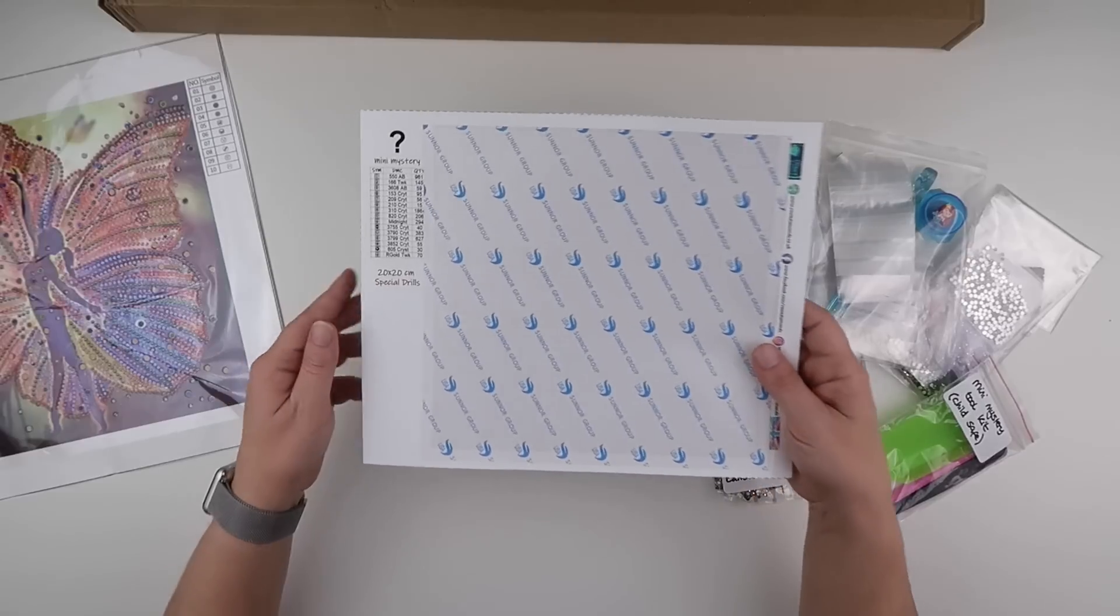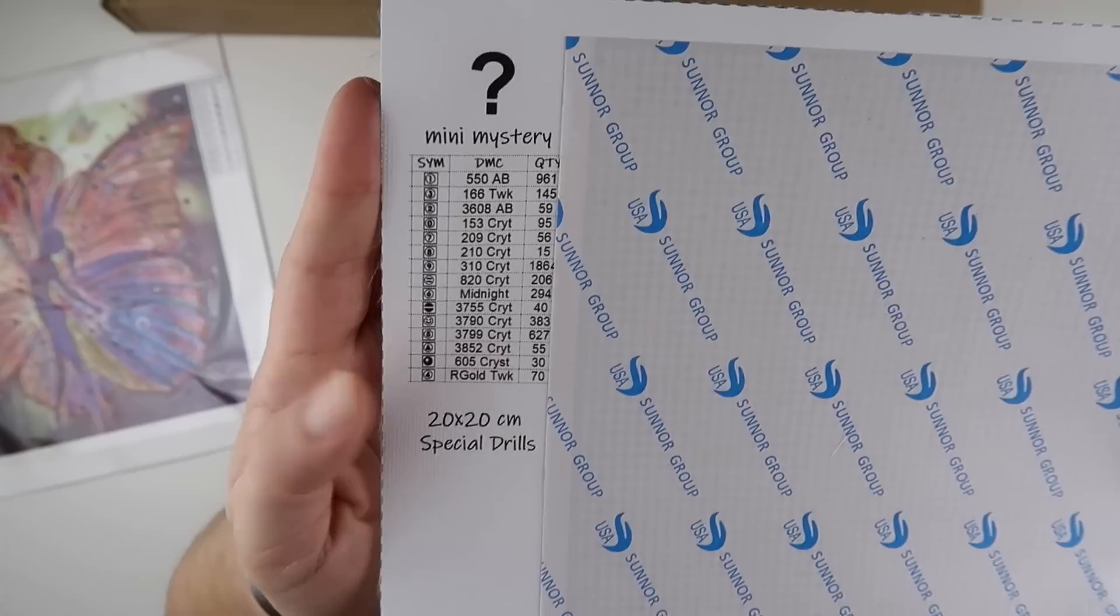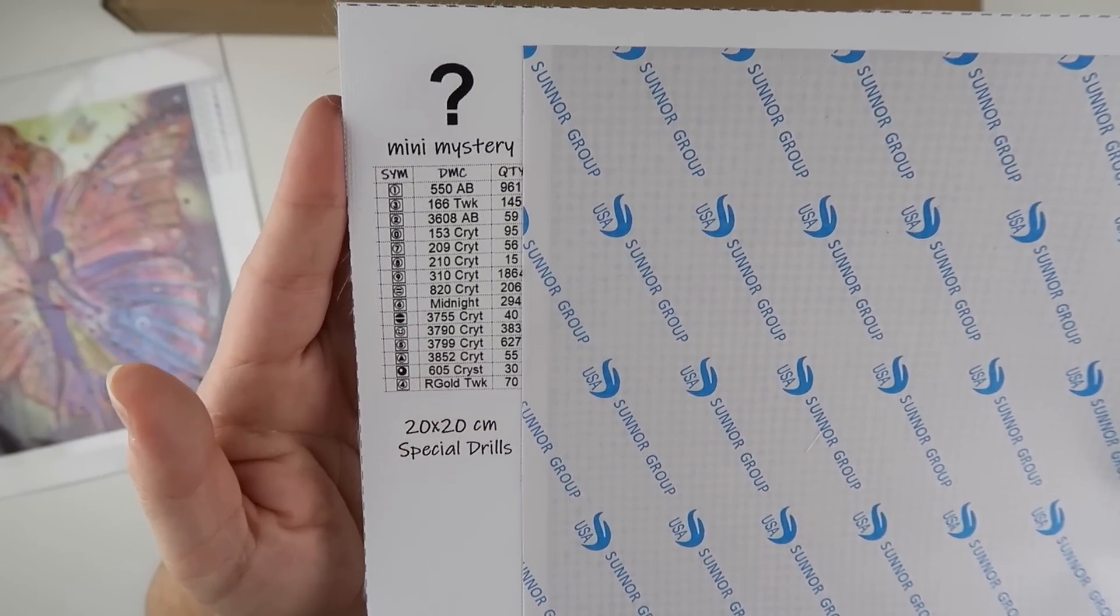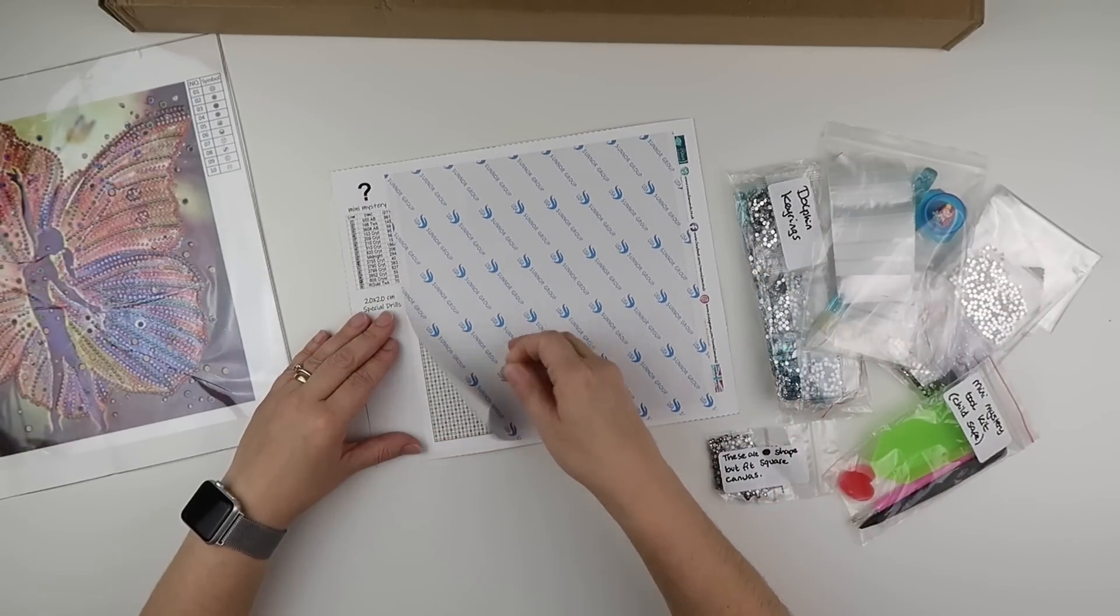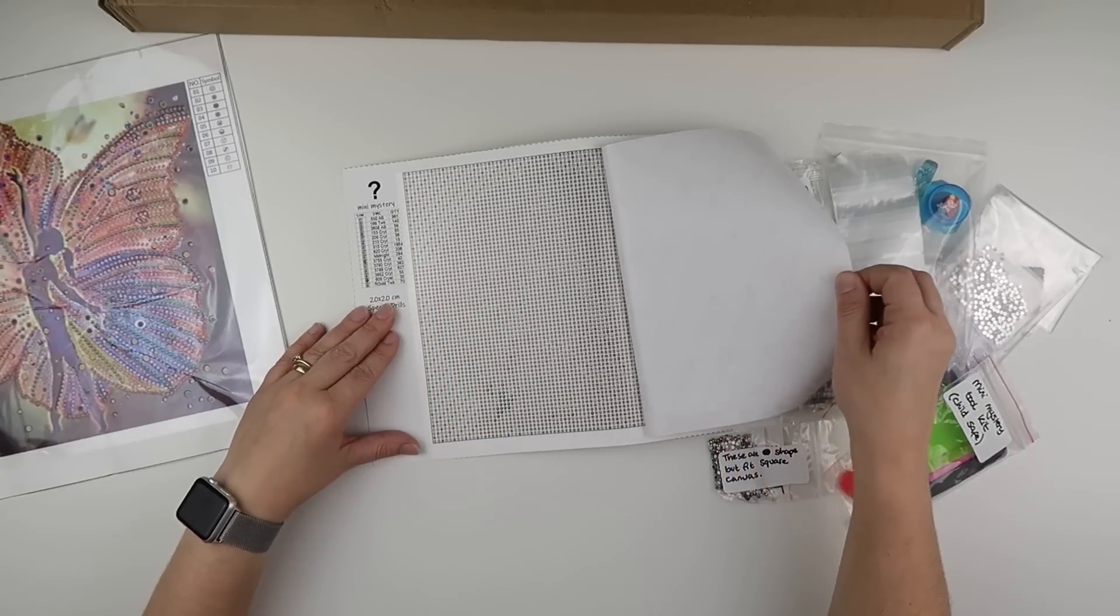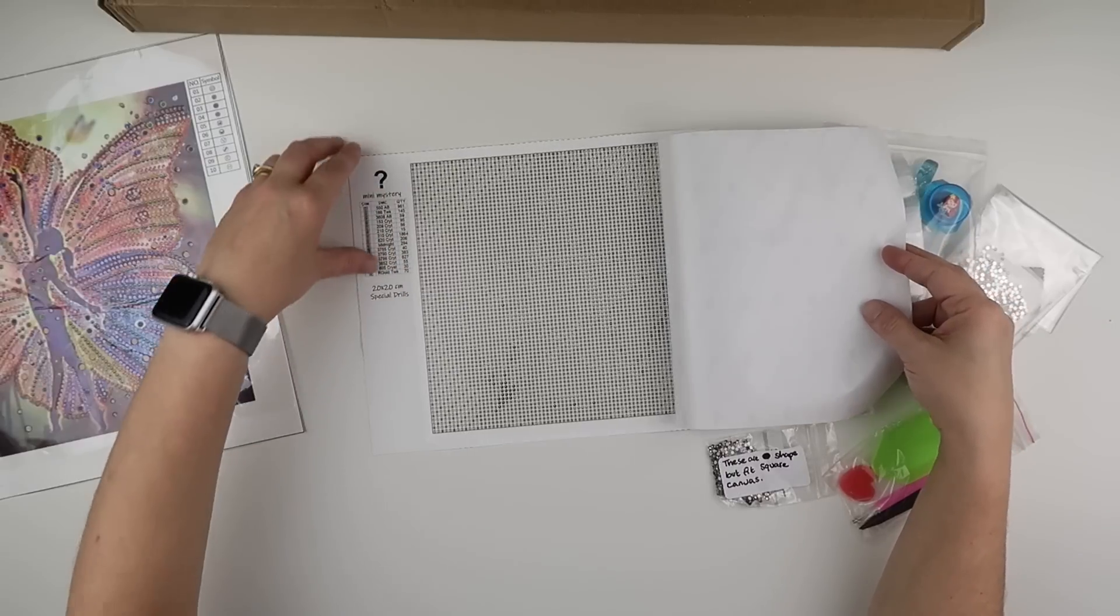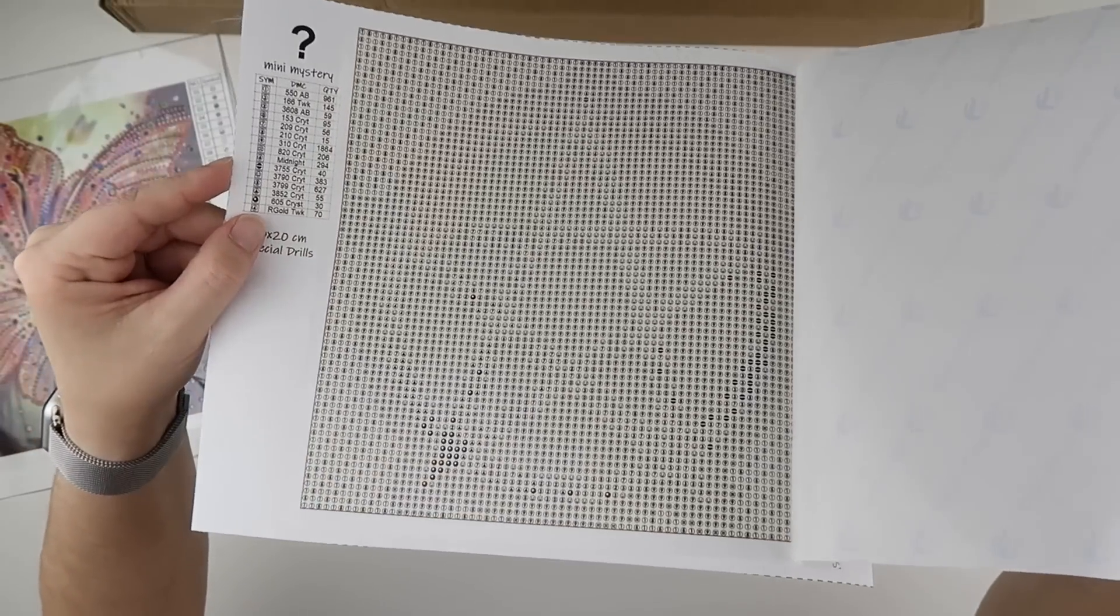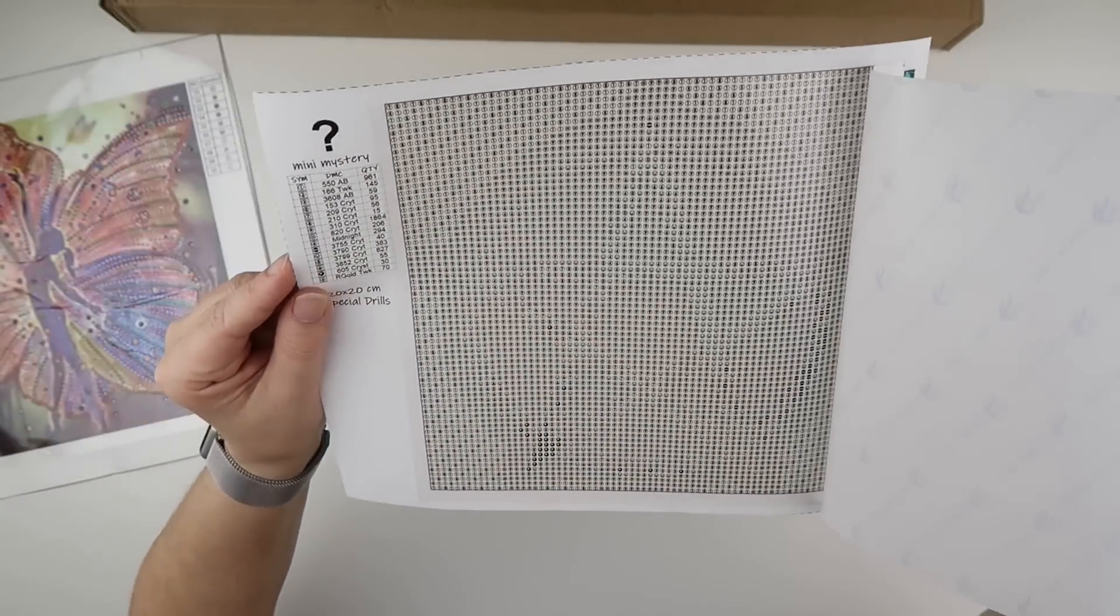Now this is rather exciting. This is a mini mystery kit. Love a good mystery kit. So mini mystery 20 by 20 special drills. Exciting. And if we peel it back, this actually has a couple of crystals and a couple of ABs. It is in round. I can't tell what that is. Maybe it's a star.